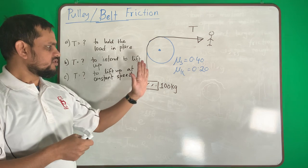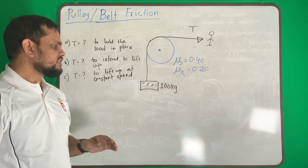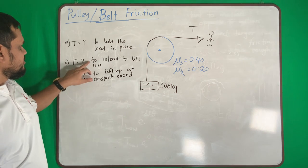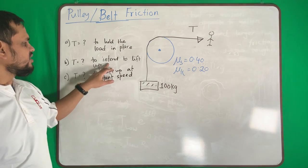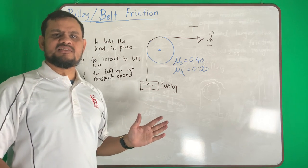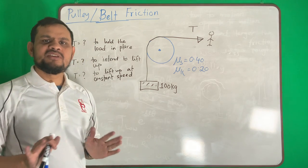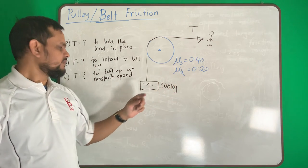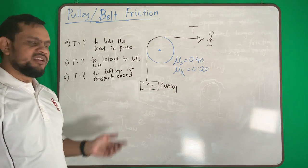At constant speed, what is the value of T? Now what is the difference between these two? Intend to lift up means the body is not moving up but it intends to move up. That means the body is not in motion, or simply this will apply static friction.